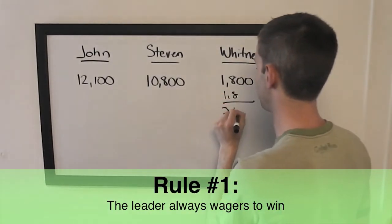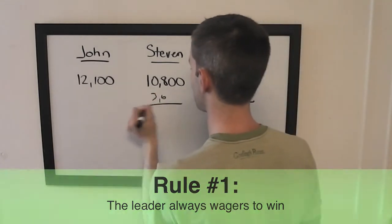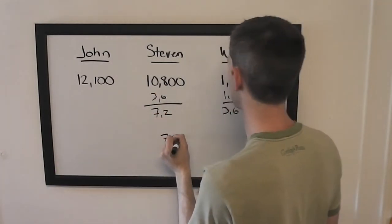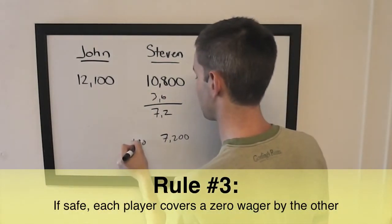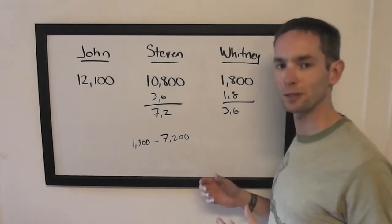We'll first check to see if it qualifies for a Shore situation, and we'll see that Stephen can wager up to 7,200 against Whitney, and the difference between these two is 1,300, so anything in this range is a strategic wager for Stephen.